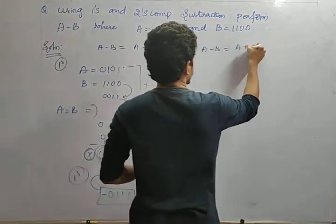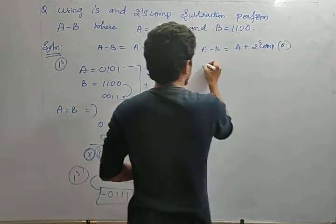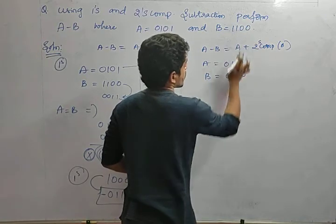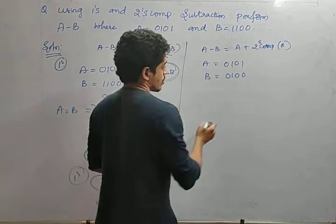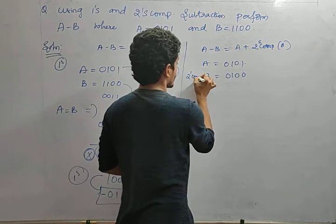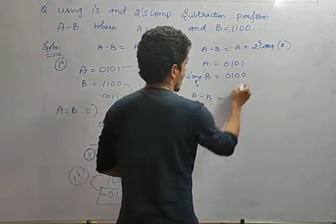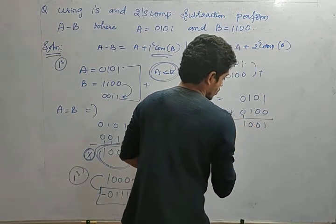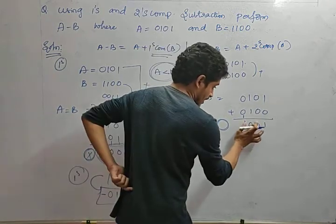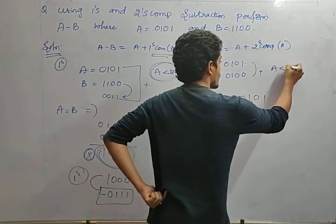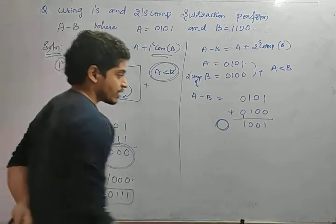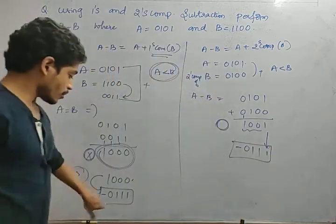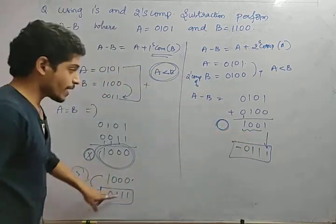Using 2s complement: A minus B = A plus 2s complement of B. A = 0101, B = 001000. The 2s complement of B: 1 stays as is, from the first non-zero onwards inversion happens, giving 0100. Adding 0101 plus 0100: result with no carry. Since there is no end carry, A is less than B. We take the 2s complement of the result and put a negative sign. The 2s complement gives 0011, answer is minus 0011. Both 1s and 2s complement methods give the same value.